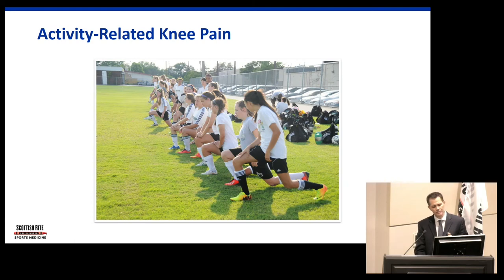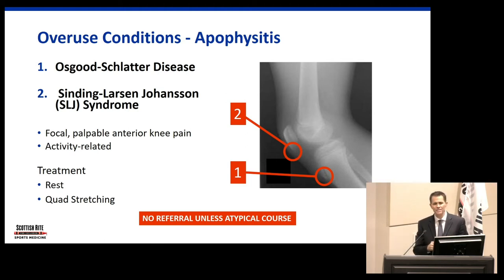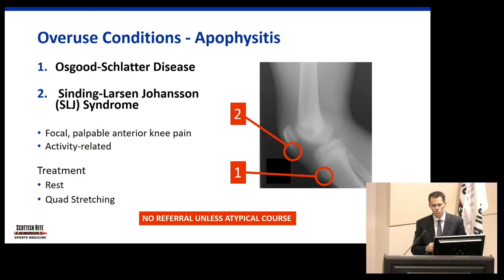Activity-related pain in the front of the knee: make them point to it. If they point to the tibial tubercle, that's Osgood-Schlatter's apophysitis. If they point to the inferior pole of the patella, that's Sinding-Larsen-Johansson — three people got their name on that — that's patellar apophysitis. Focally tender, activity-related, pain only in that one place, and the growth plate is going through that transition with a lot of stress applied during activities. Usually the treatment is rest, anti-inflammatories, quad stretching, and reassurance that it will get better.